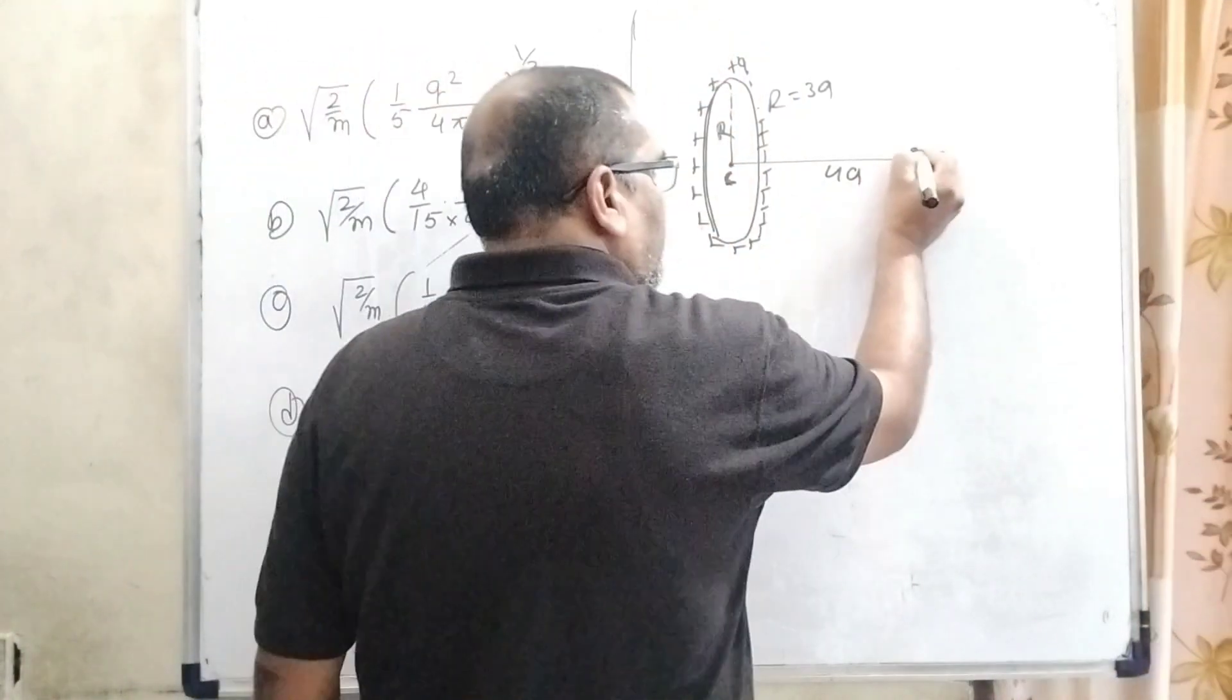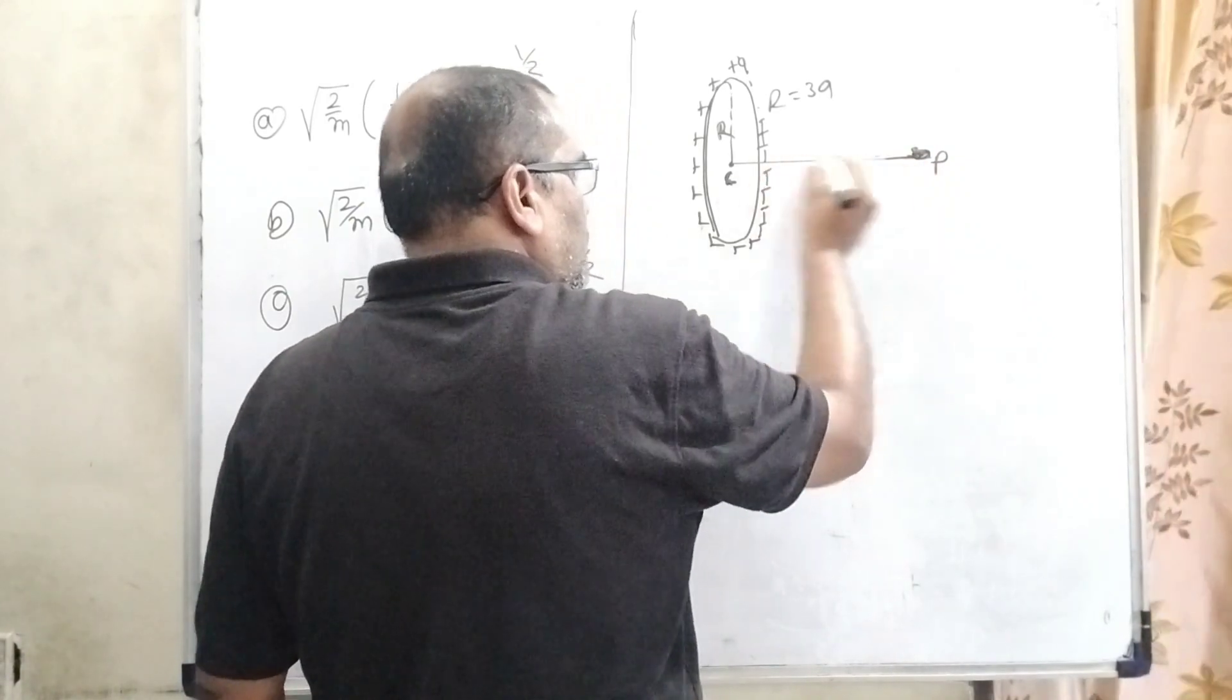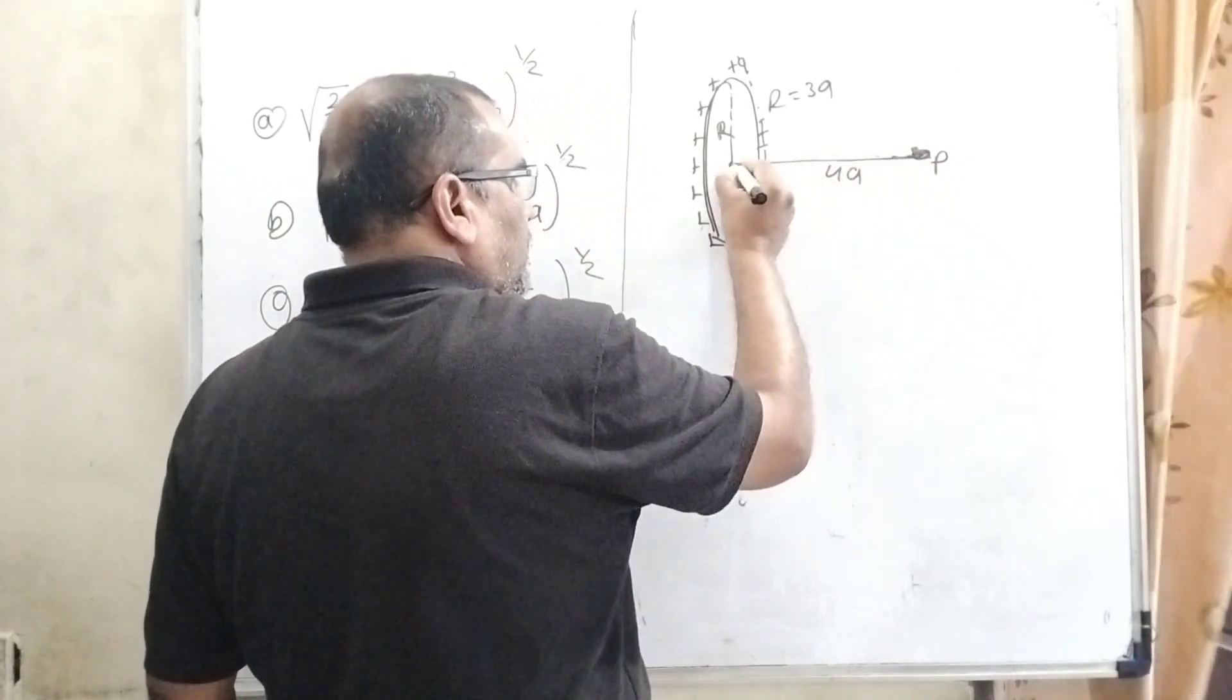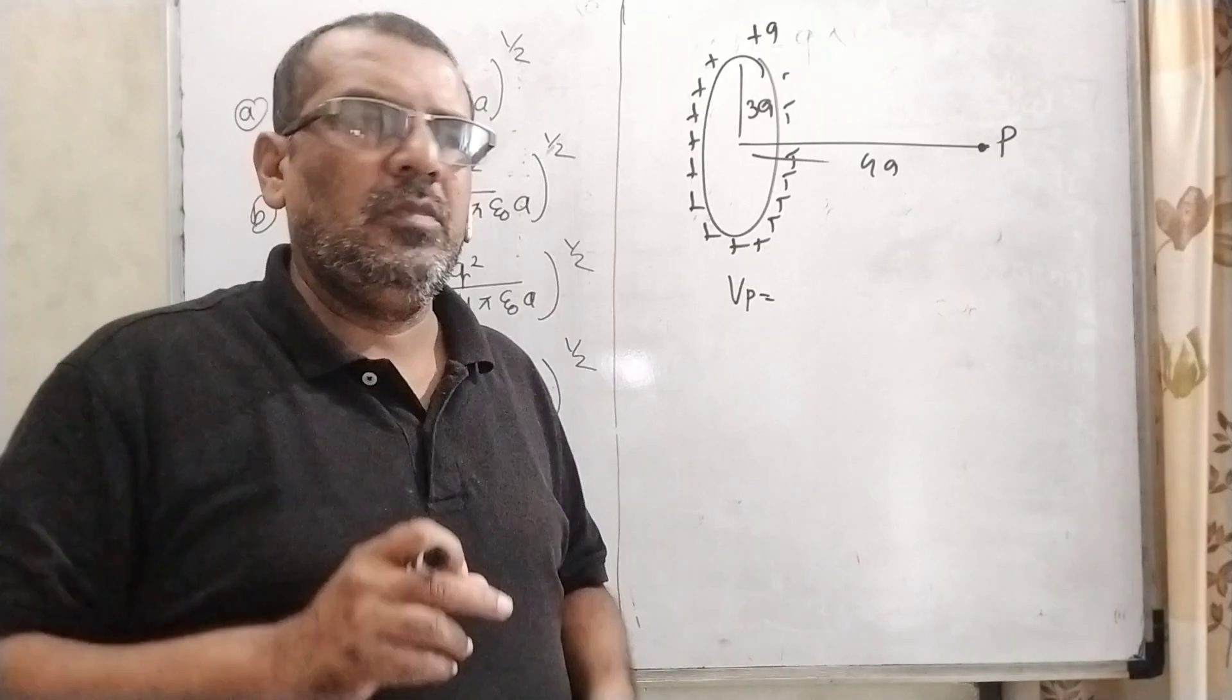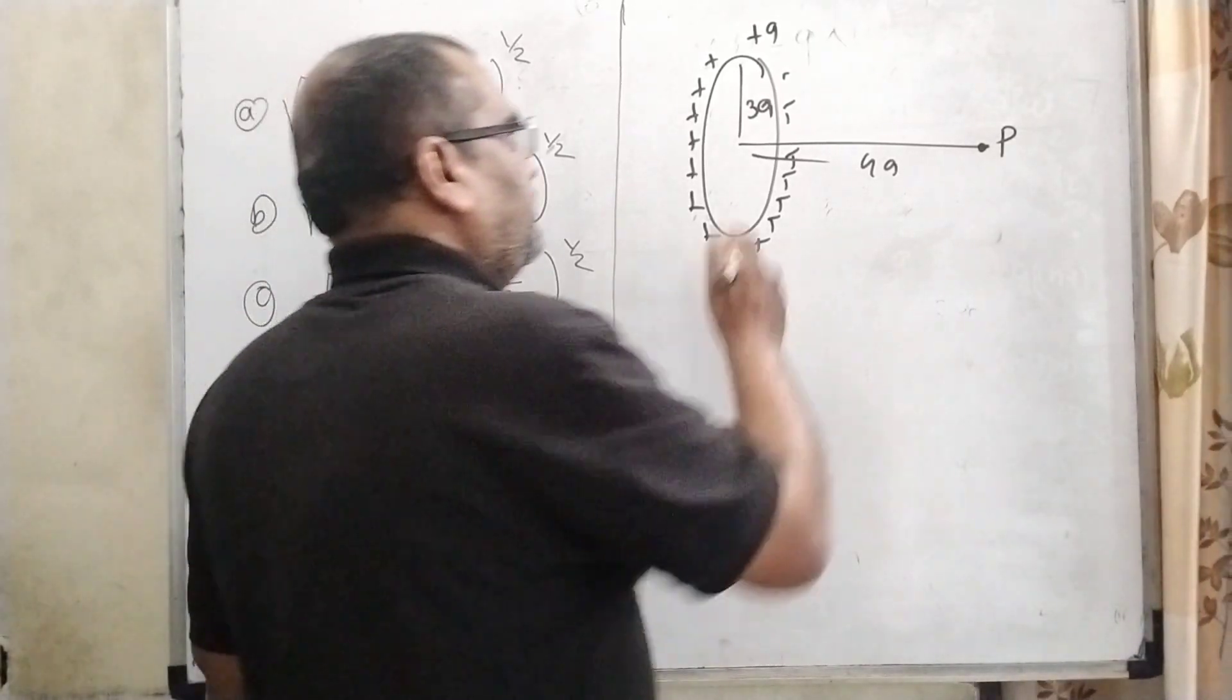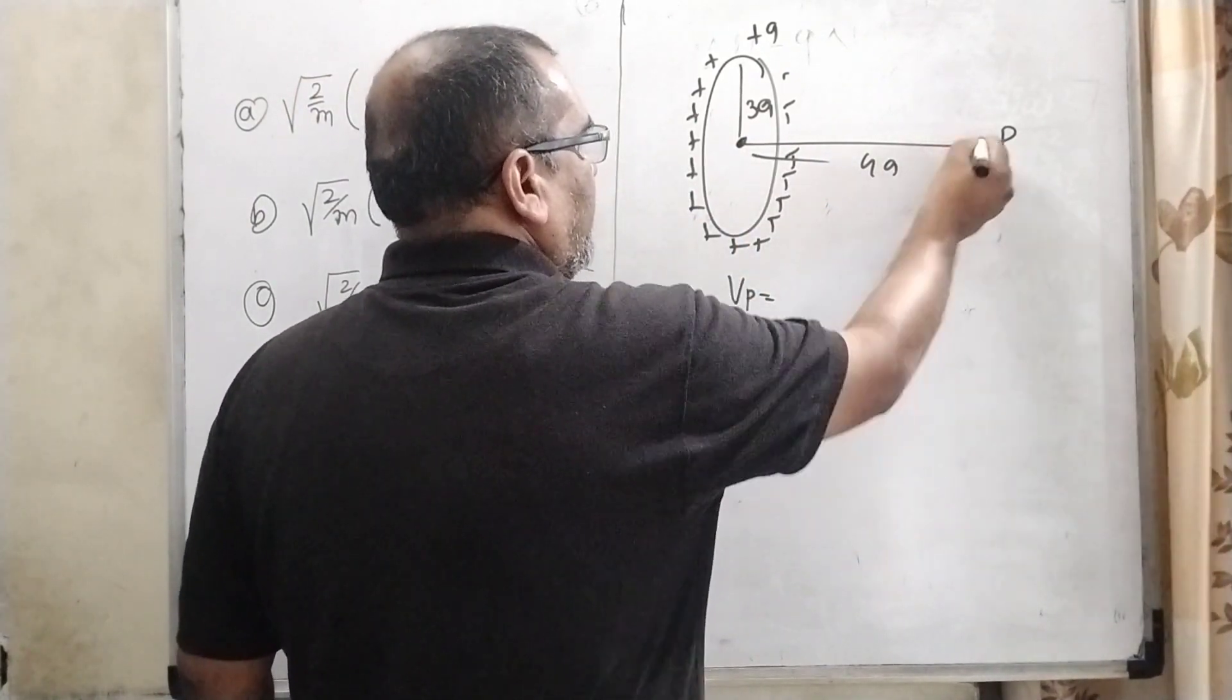And this charge q, positive charge q, is coming towards this ring and passing through the center. We have to find out the minimum velocity. Now, let us first find out the potential difference at point P.